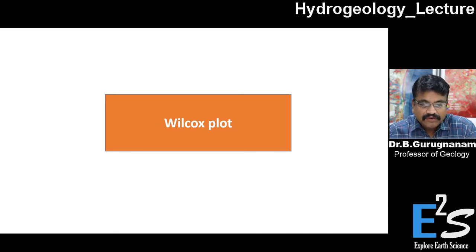After the interpretation, you'll be getting only numerical numbers. The numerical numbers for 100 samples in a table could not be able to interpret which sample is good for agriculture or not good in terms of quality. Hence, many graphical interpretations were derived by scientists working on groundwater chemistry. One among the graphical interpretations is the Wilcox plot.